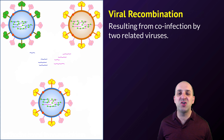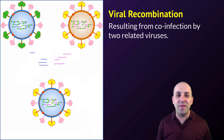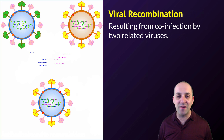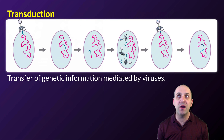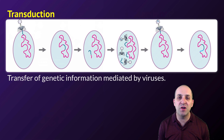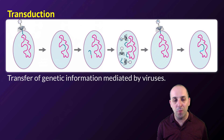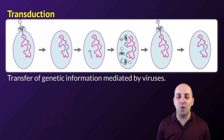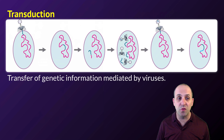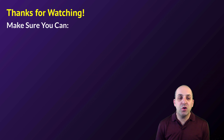Viruses can also recombine their genomes. If two different strains simultaneously co-infect the same cell, they exchange genetic material so that the viral offspring have a combination of genetics from both infecting strains. Viruses also play a role in moving genetic material between bacterial cells through transduction: a phage can get packaged with chromosomal material from the cell it invaded, and when it infects the next cell, it transfers that genetic material, increasing variation through horizontal gene transfer.